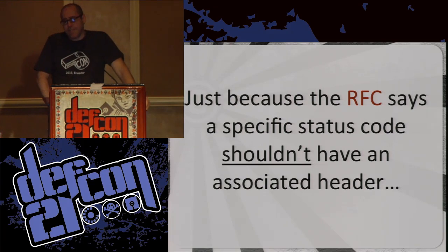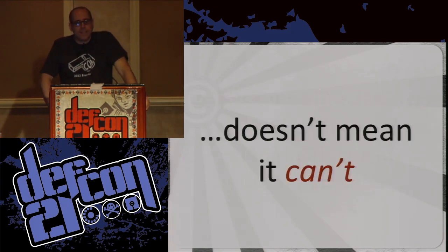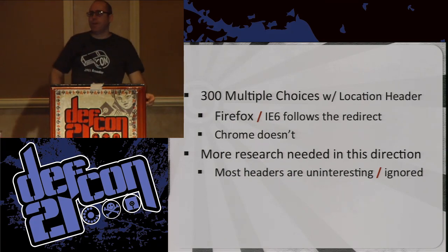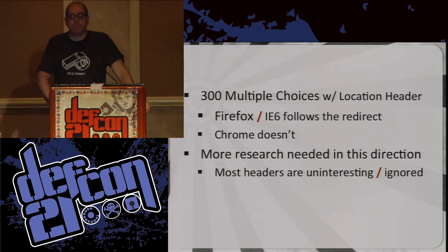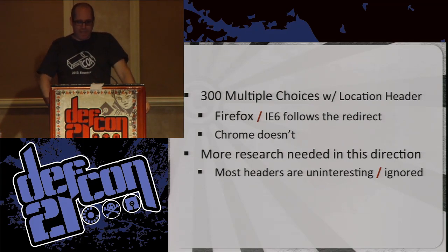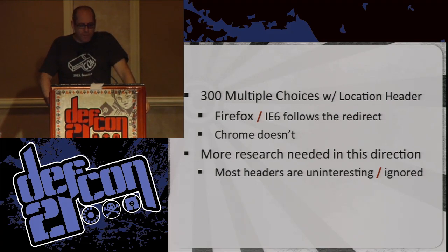On the flip side, just because an RFC says a specific status code shouldn't have a header, it doesn't mean it can't have a header. If you read the RFCs, there's 300 multiple choices — this shouldn't have a location header and shouldn't redirect you. It should come up with an HTML where you can specifically select where you'd like to go. Unless of course you're Firefox or IE, in which case if you give it a location header, it's just going to redirect. But Chrome isn't. And there are so many headers out there you can play with — the retry-after header in particular can really be played with and a little bit more research is required there.